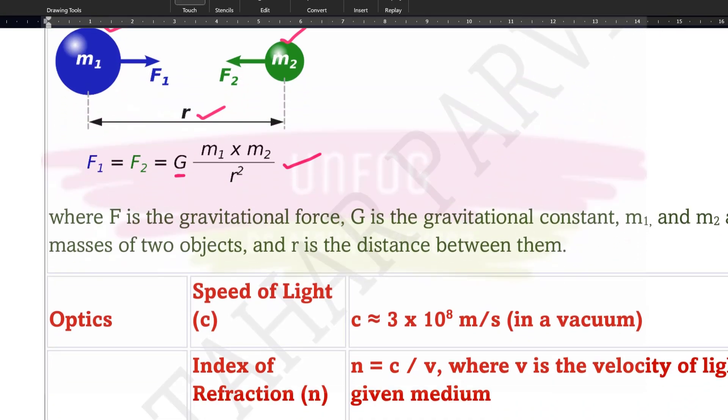Then let us talk about optics. When we talk about optics, it is very important for us to understand that the light has one speed, the speed value is 3 into 10 to the power 8 meter per second. Another important formula is of refractive index that is c upon v where c is the speed of light in vacuum and v is the velocity of light in given medium.